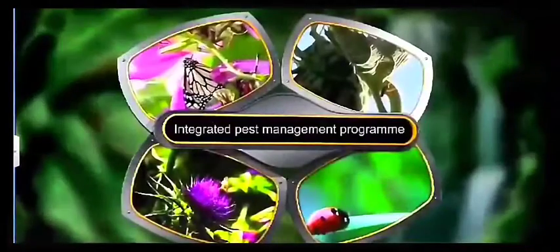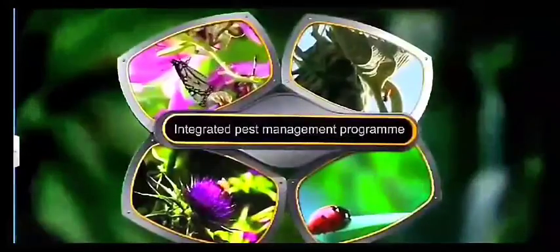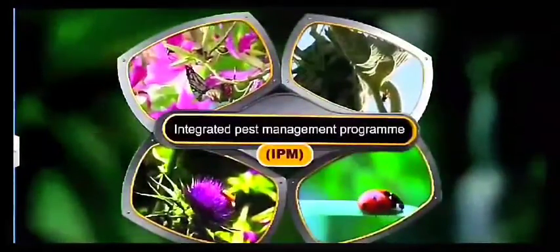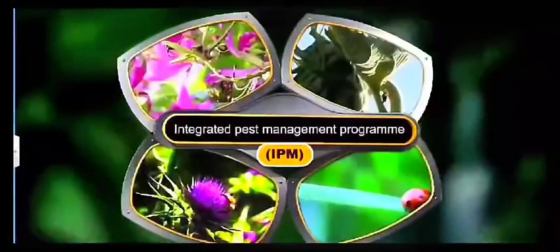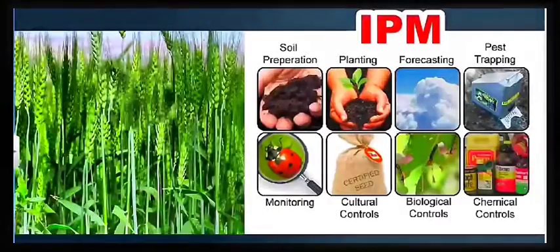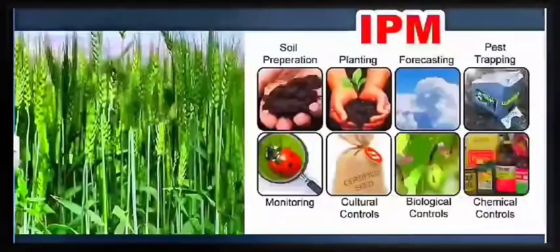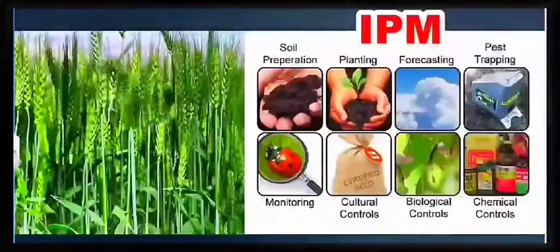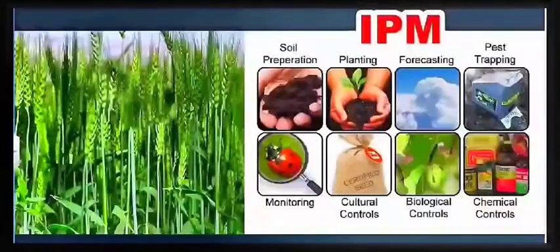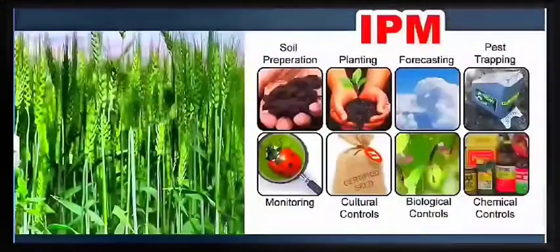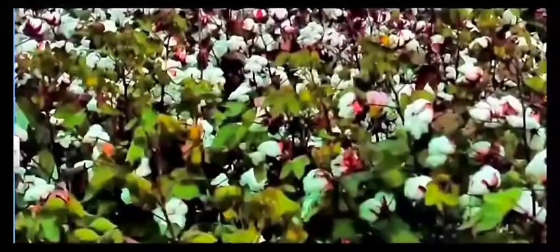Organic farming is a part of the integrated pest management program. In the integrated pest management program we take various aspects of good agricultural practices like soil preparation, using good seeds, monitoring the growth of different useful and harmful insects, using only certified seeds, using biocontrol agents, and so many other methods.